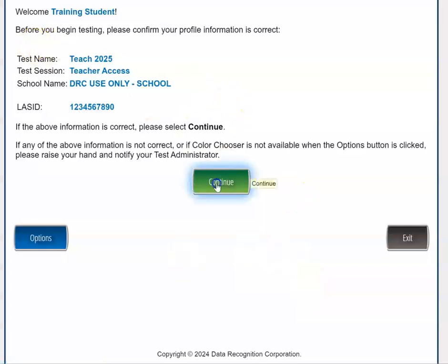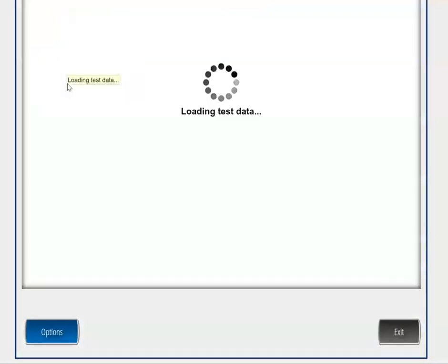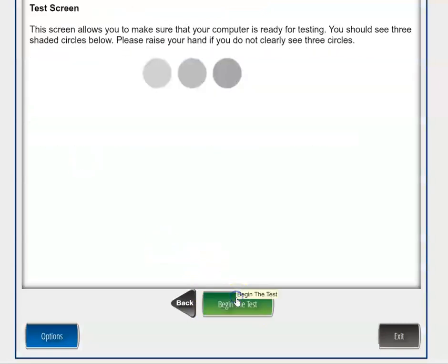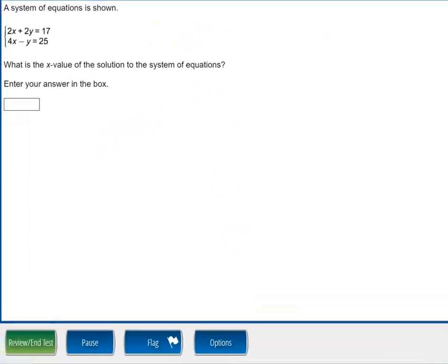When you get to this screen, click continue. Now we've already gone over Section 1B. I did skip Section 1A because there was no calculator. So the whole point of this training is to get your kids familiar with the Desmos graphing calculator. I'm skipping now to Section 2. This section is a little longer. We're not going to look at all the items. I'm specifically going to stick with items that require the use of the Desmos graphing calculator.